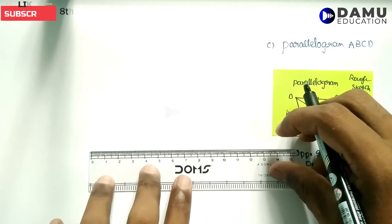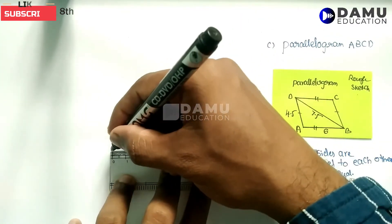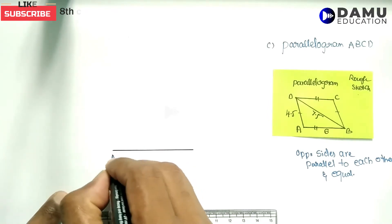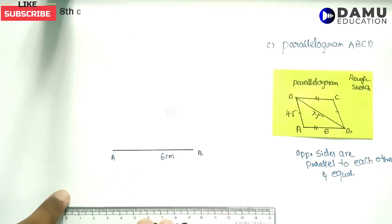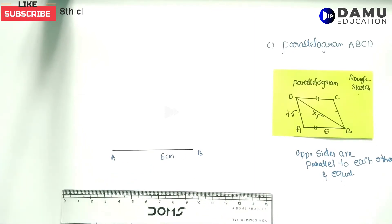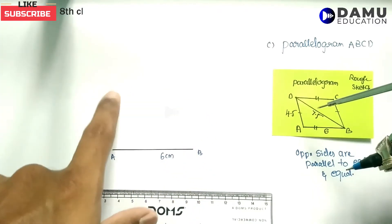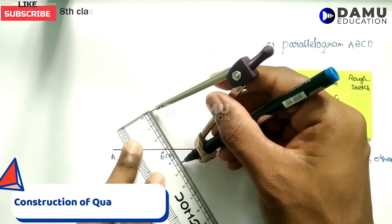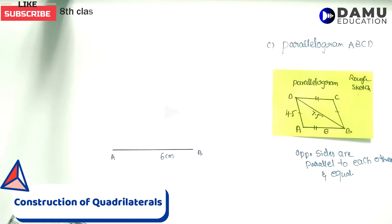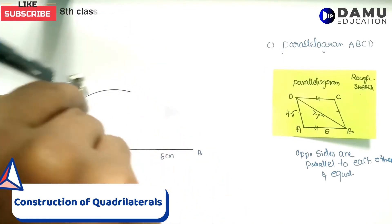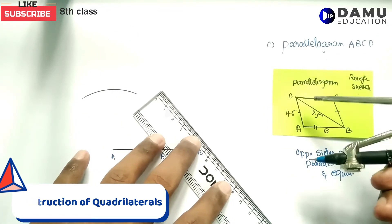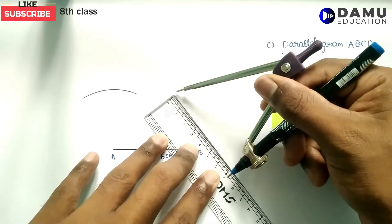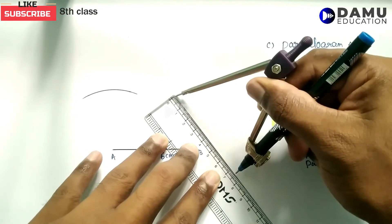First, draw base AB as 6 centimeters. Using a compass, take A as center and draw an arc with radius 4.5 centimeters for AD. Then BD is 7.5 centimeters, so extend to mark that — this is exactly 7.5 centimeters.